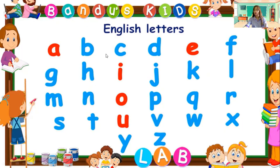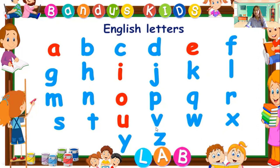While the letters that are color blue, they are the consonants. Let us say the consonant letters: B, C, D, F, G, H, J, K, L, M, N, P, Q, R, S, T, V, W, X, Y, and Z are the consonants or the consonant letters.